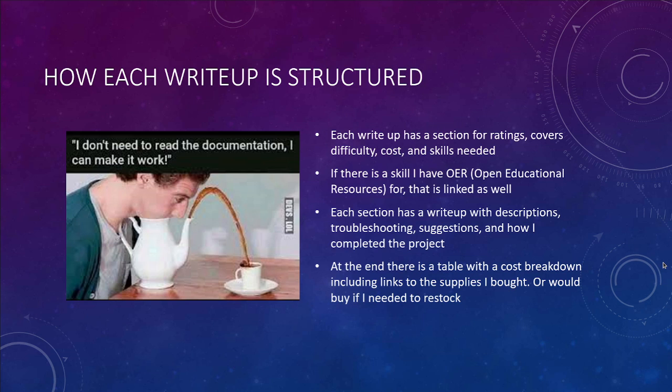The website where I did all of these write-ups is also how I publish my OER work. Each write-up has descriptions, troubleshooting suggestions, and things I found confusing as I went through the project. At the very end there's a table with a cost breakdown and links to some supplies. In some cases these were supplies I bought; in others they're supplies I would buy if I needed to restock. In a lot of cases I actually had supplies at home from other projects, so I didn't need to go buy everything — like wires, but I didn't have CO2 sensors just lying around.